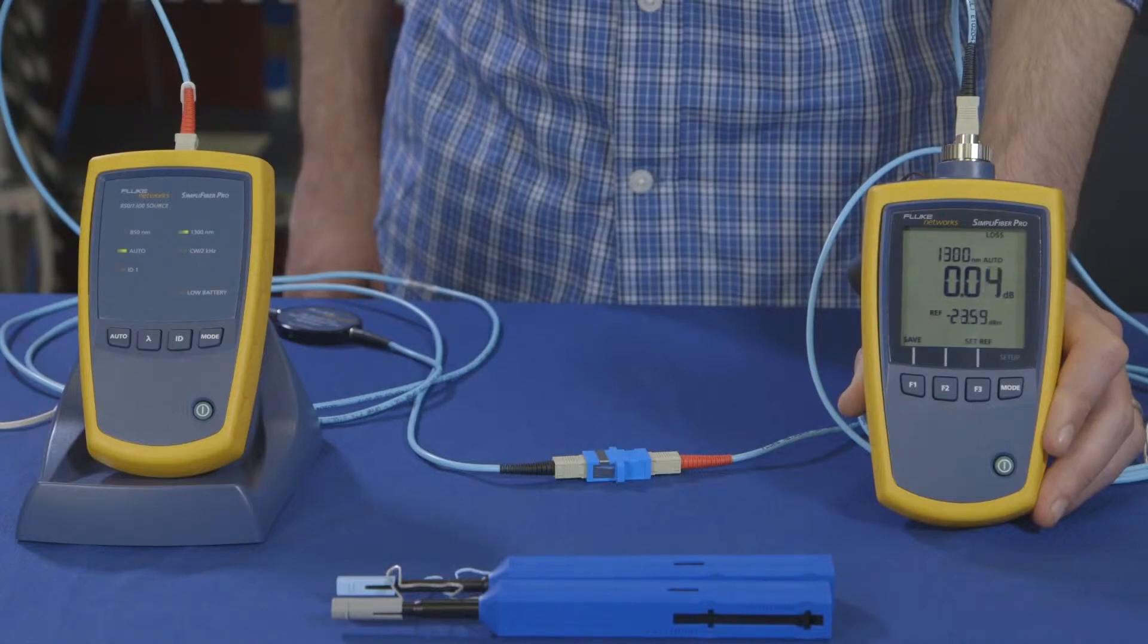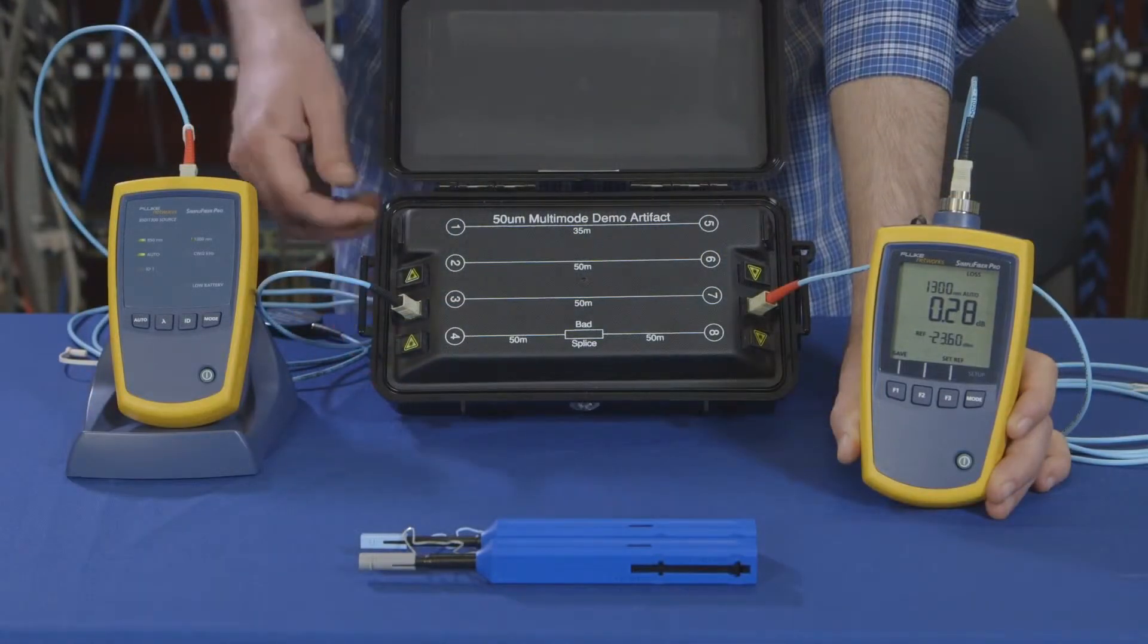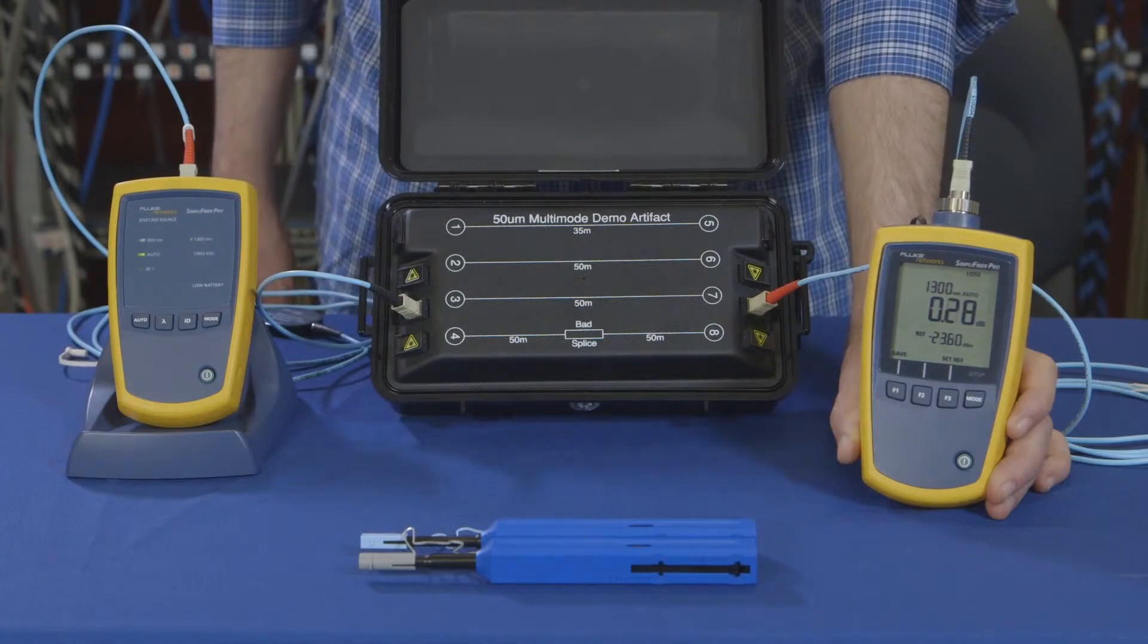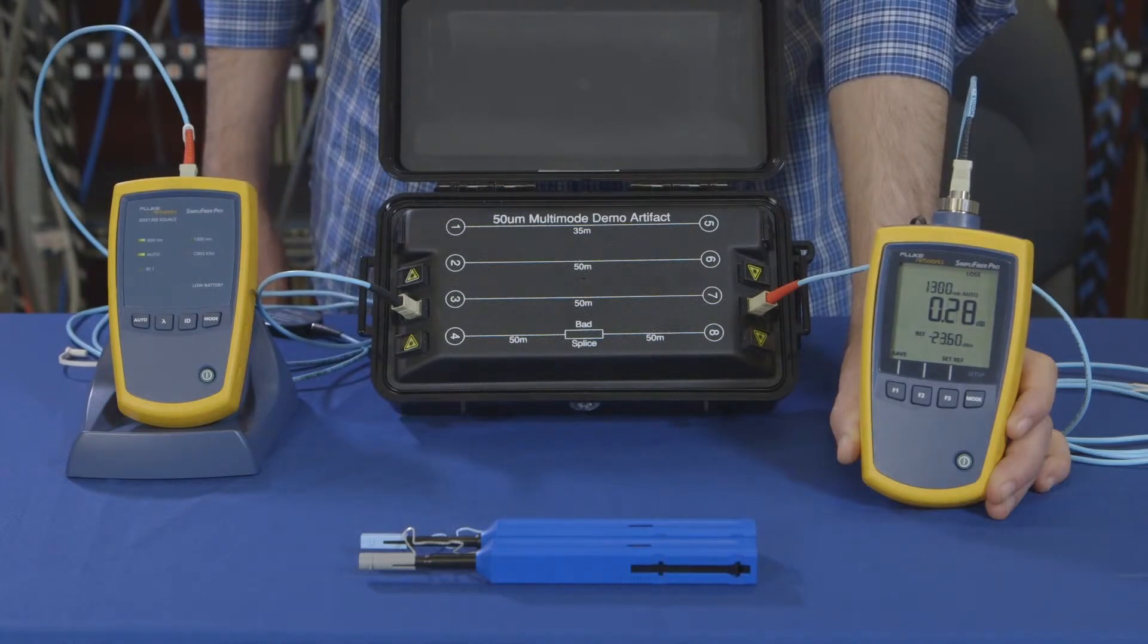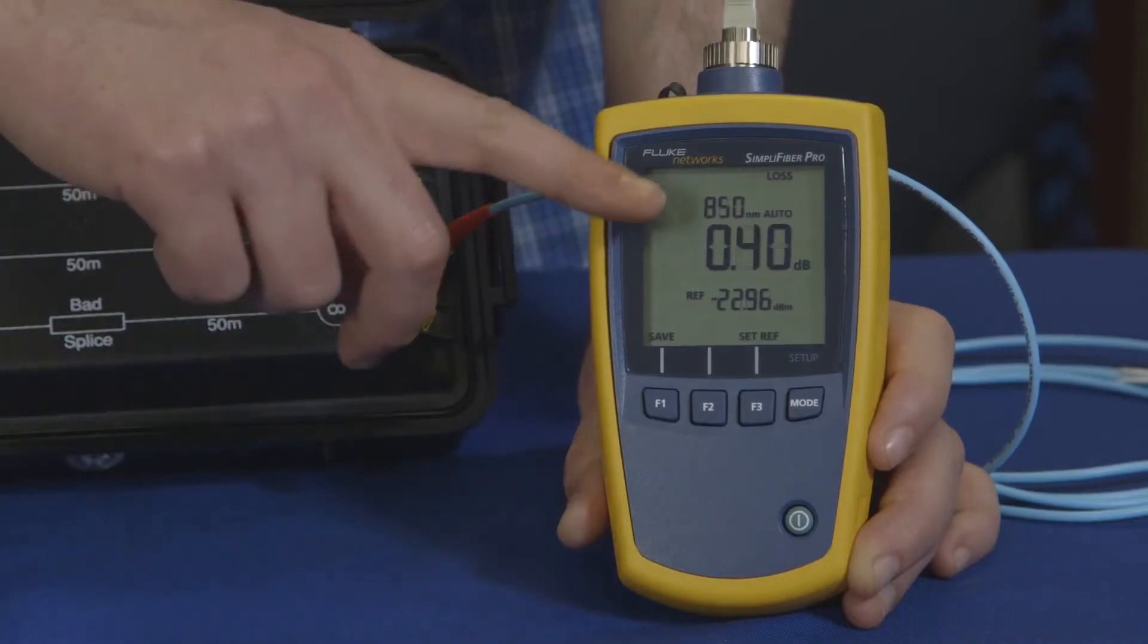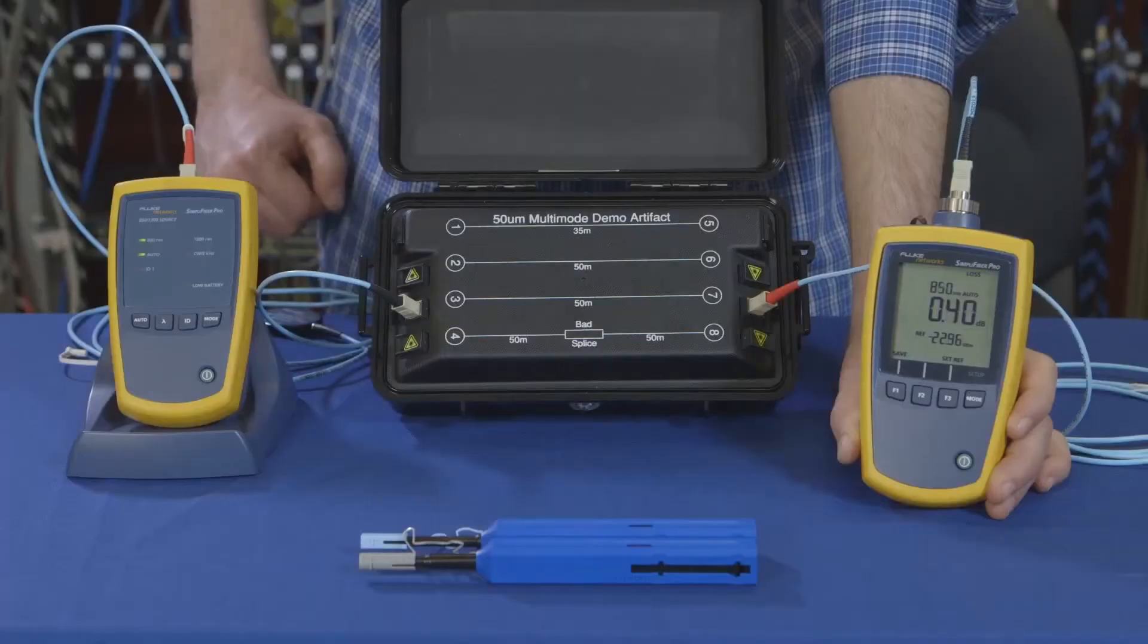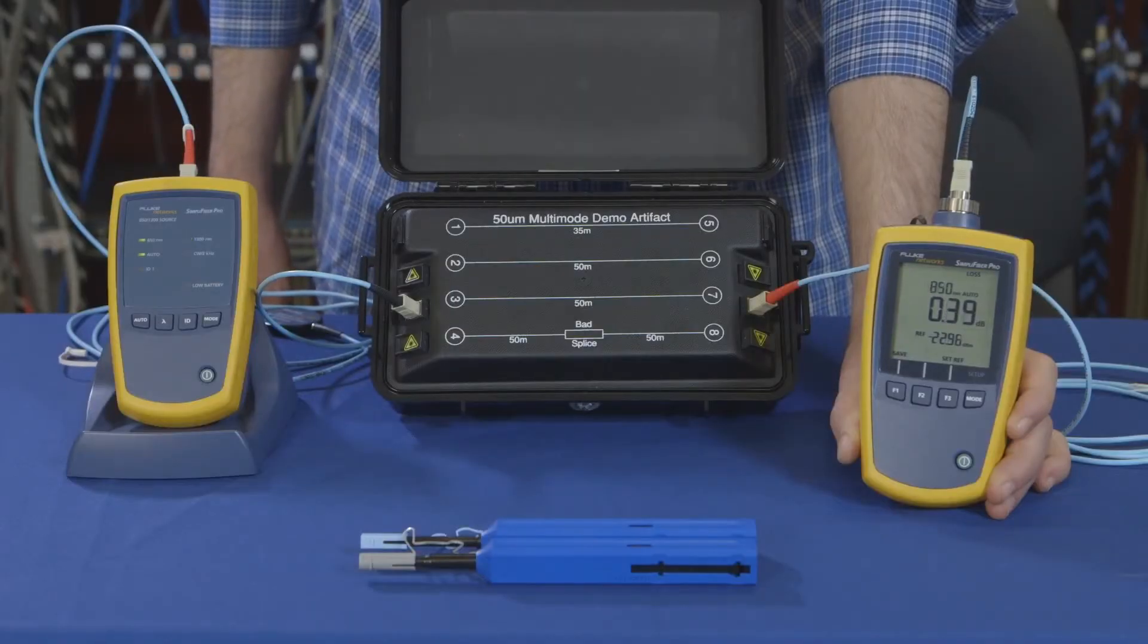We're now ready to test. After cleaning and inspecting our fiber under test, we connected the light source and the power meter and are ready to take our measurement. You'll notice the source is alternating between 850 and 1300 nanometers, giving you both wavelengths in one result.